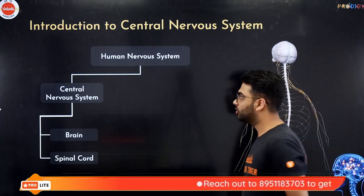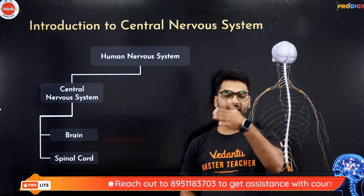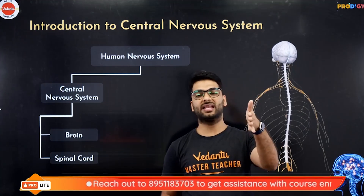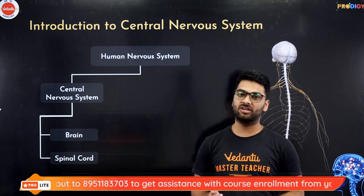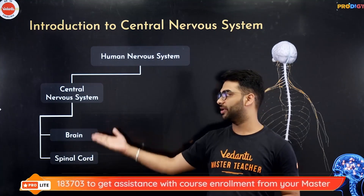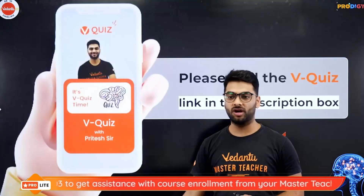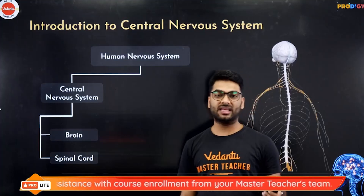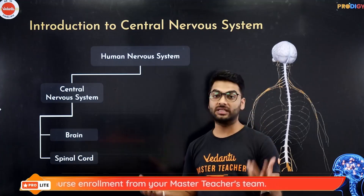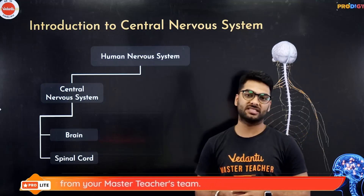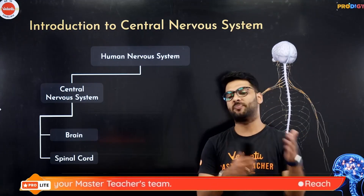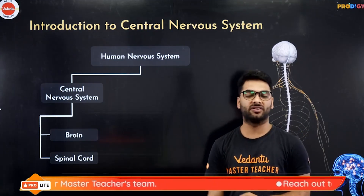When I talk about the nervous system of humans, it has the CNS, PNS and ANS. CNS is the central nervous system, consisting of the brain and the spinal cord. PNS is the peripheral nervous system which includes all the nerves. ANS is the autonomic nervous system, made of the sympathetic and parasympathetic nervous systems.